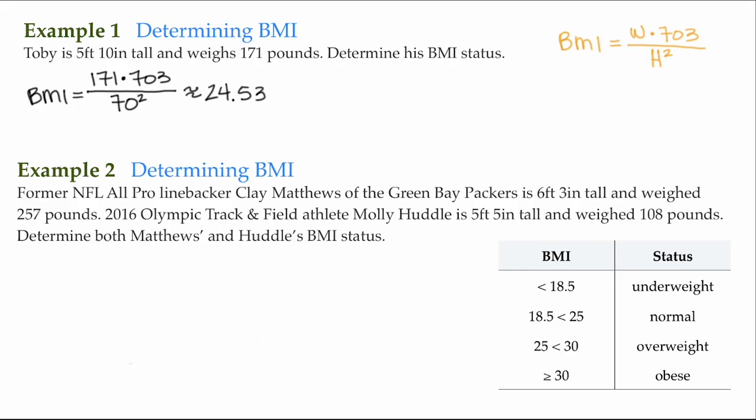For example 2, former NFL All-Pro linebacker Clay Matthews of the Green Bay Packers is 6 feet 3 inches tall and weighed 257 pounds. 2016 Olympic track and field athlete Molly Huddle is 5 feet 5 inches tall and weighed 108 pounds during her running career. Determine both Matthews' and Huddle's BMI status.